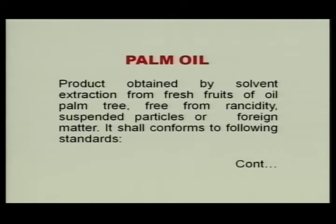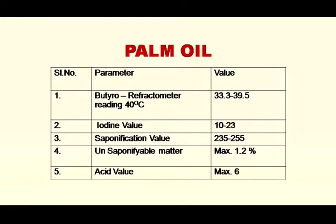Palm oil is also commonly sold in the market. The product is obtained by solvent extraction from fresh fruits of the oil palm tree, free from rancidity, suspended particles, or foreign matter. It shall conform to the following standards: refractometer reading at 40°C is 33.3–39.5, iodine value 10–23, saponification value 235–255, unsaponifiable matter maximum 1.2%, acid value maximum 6. If palm oil is mixed with sunflower oil, it can be detected by the iodine value.